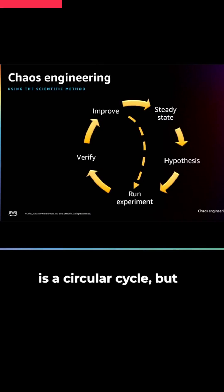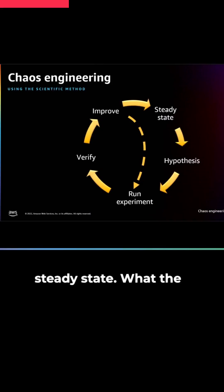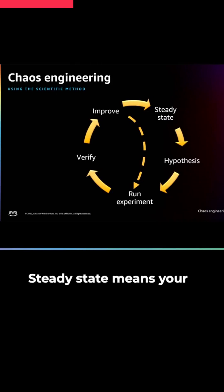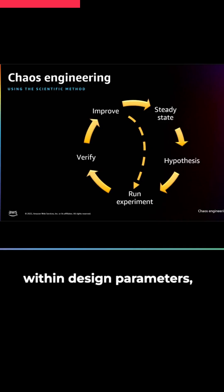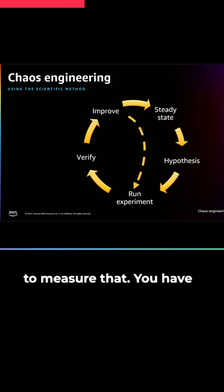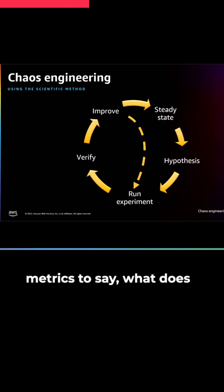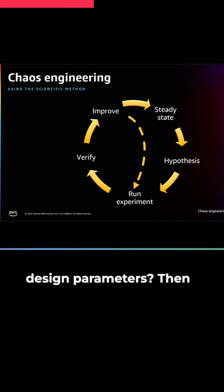This is a circular cycle, but I'm going to start with steady state. What is steady state? Steady state means your workload — the workload under test — is operating within design parameters, and you have to be able to measure that. You have to be able to assign metrics to say what it means to operate within design parameters.